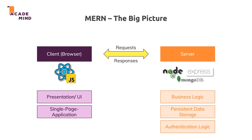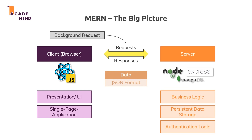Client and server communicate with HTTP requests and responses exchanged between these two ends. We send background HTTP requests from inside our React app to our Node/Express application, which then replies with responses. Data is typically exchanged in JSON format. We will have an entire theory module covering this in detail, and then a huge course project built from scratch where we build the front end, back end, and connect to a database.